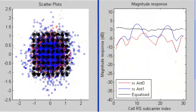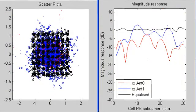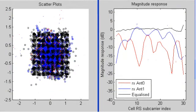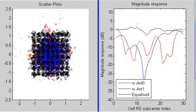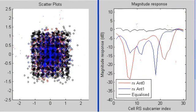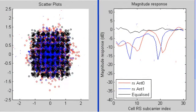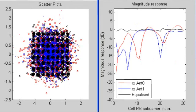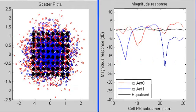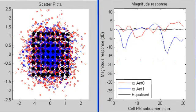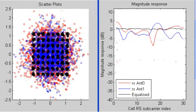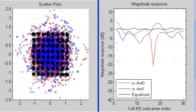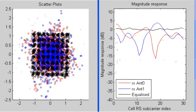The plot on the left shows the symbol constellation. This simulation setup has a relatively low noise but a channel which is quite frequency-selective and time-varying. The red and blue constellations are extremely distorted by this channel, but the black constellation can clearly be seen as 64-QAM.